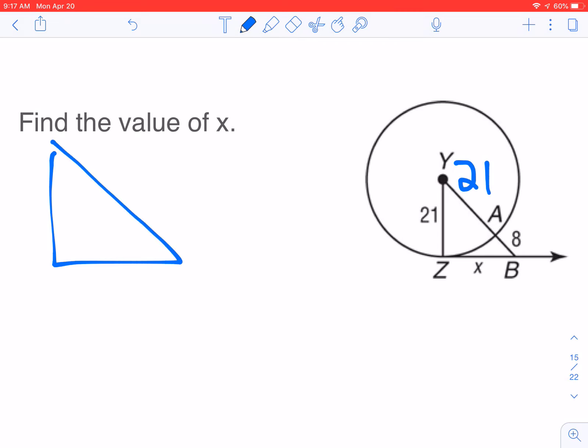Yes, it's a right angle. This will be 21 plus 8, which is 29. This will be 21. This will be x. x squared plus 21 squared equals 29 squared. And when we solve this out, it's going to be another triple. However, I don't have this triple memorized.